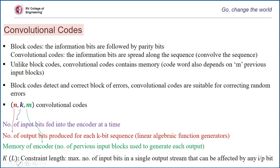Another parameter is constraint length, which is indicated as either K or L in certain sources. It indicates the maximum number of input bits in a single output stream that can be affected by any input bit. We will explain the meaning of this shortly.